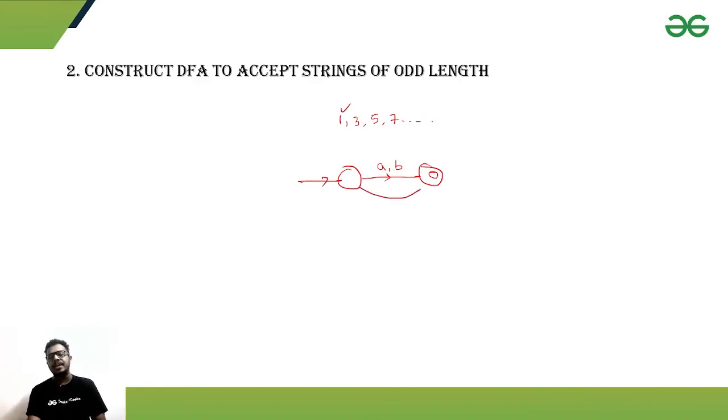After that, if we are again getting another symbol, then that means it will go to the non-accepting state, because another symbol makes the whole string even. Suppose this is state A and state B.